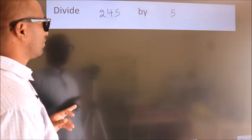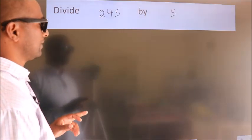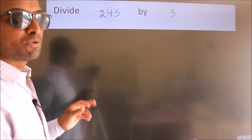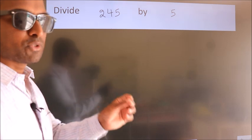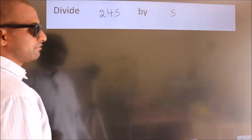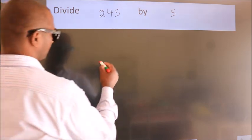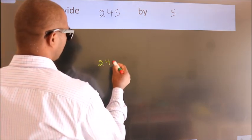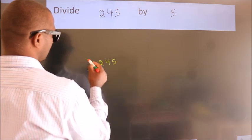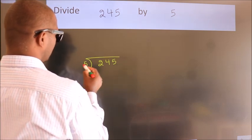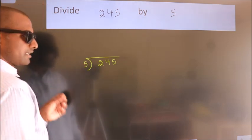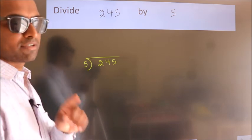Divide 245 by 5. To do this division, we should frame it in this way: 245 here, 5 here. This is your step 1.